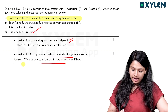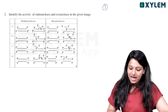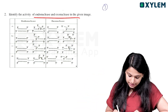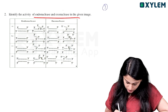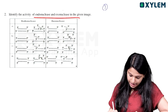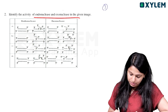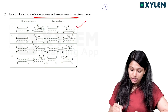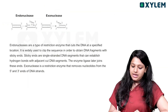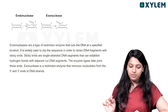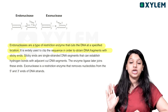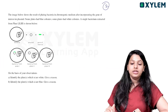Identify the activity of endonuclease and exonuclease from the given image. Endonuclease cuts within the DNA at specific sites in between. Exonuclease cuts at the terminal entry point. So endonuclease cuts in between the DNA, and exonuclease cuts at the terminal ends. Endonuclease is a type of restriction enzyme that cuts DNA at specific locations and sequences to obtain DNA fragments.